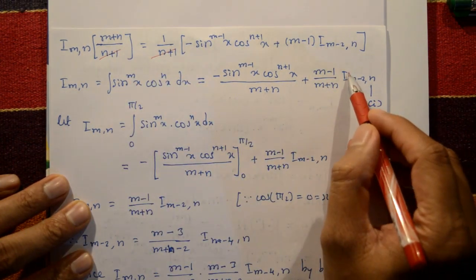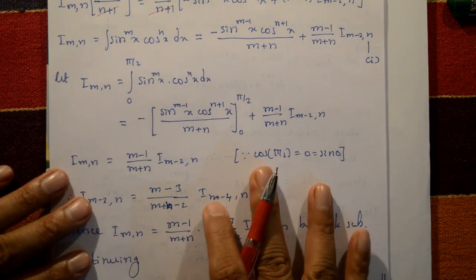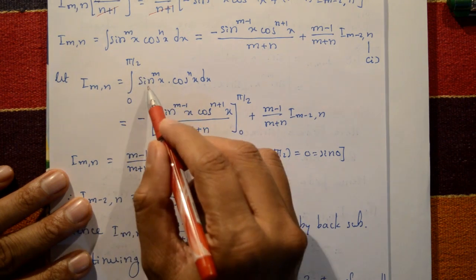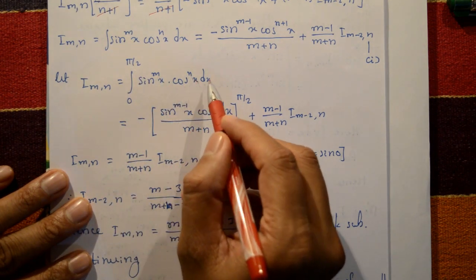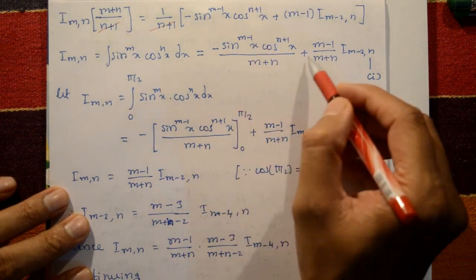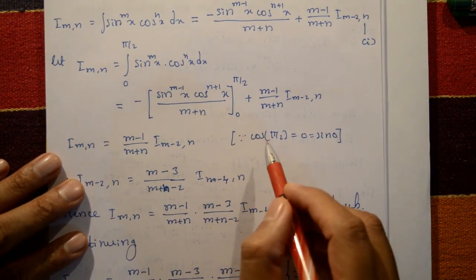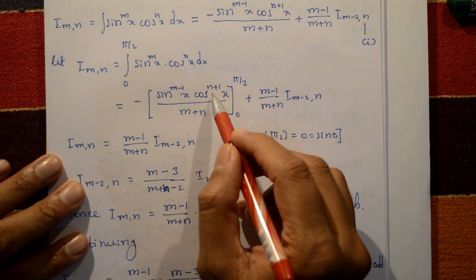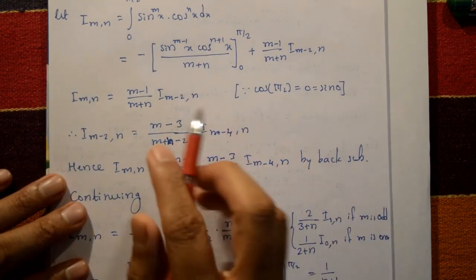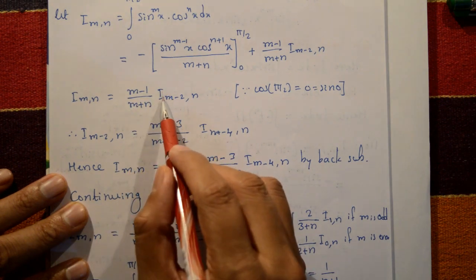Using limits 0 to π/2: the definite integral from 0 to π/2 of sin^m(x)·cos^n(x) dx. Applying the boundary term at limits — cos(90°) = 0 and sin(0°) = 0 — the boundary term vanishes. So I_mn = (m−1)/(m+n) · I_(m-2,n).